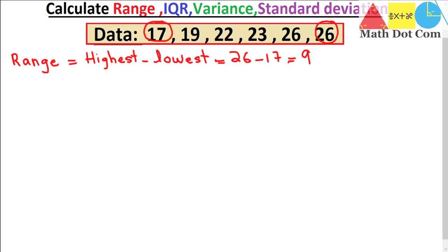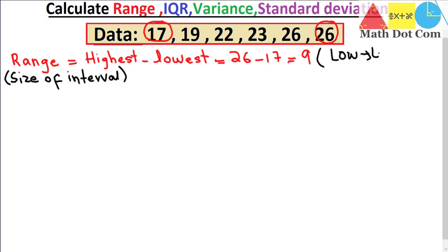The value of the range basically tells you the size of the interval of the data. A small range tells you that the data is less dispersed, and a large range tells you that the dispersion is more. The range is not good when you have outliers in the data, that is extreme values. A low value refers to less variability and a high value refers to high variability — that is, the data is more dispersed.